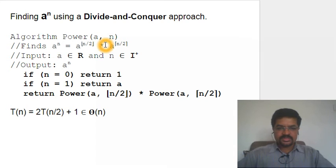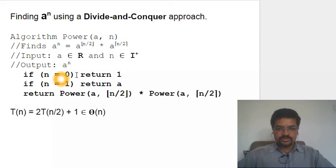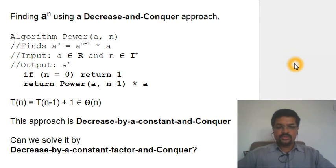The divide and conquer approach for a^n divides it into two subproblems: find a^(floor(n/2)) and a^(ceil(n/2)), then multiply them. Using floor and ceil handles the odd case as well. The base cases are: a^0 = 1 and a^1 = a. Otherwise, recursively compute a^(floor(n/2)) and a^(ceil(n/2)). The time efficiency of this approach is also Θ(n).